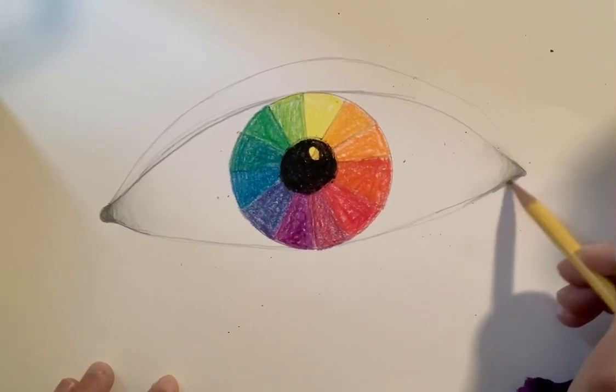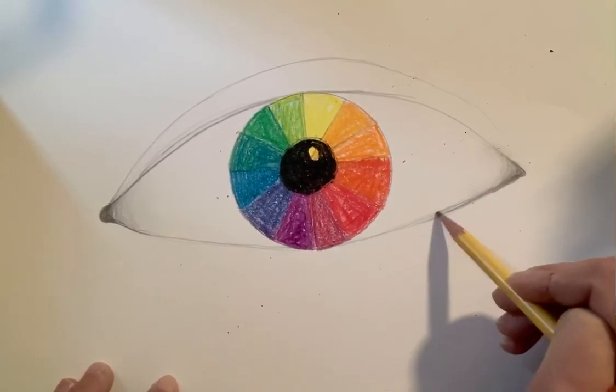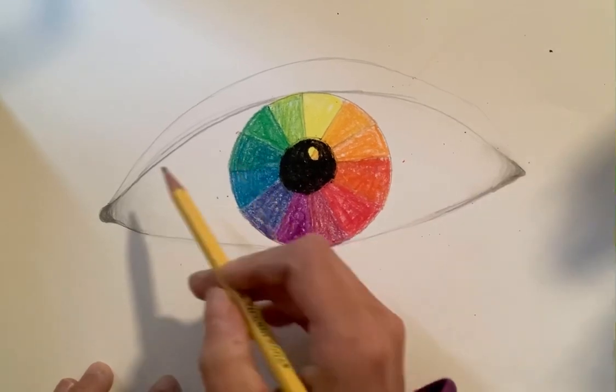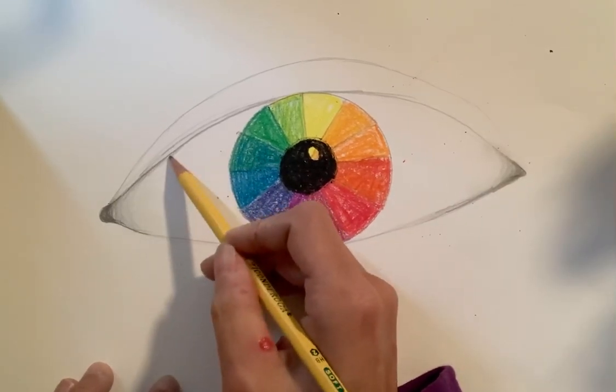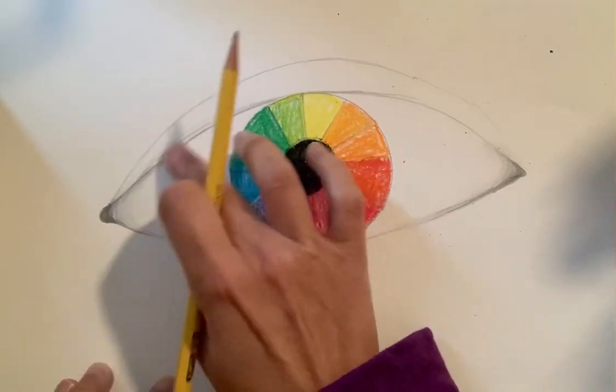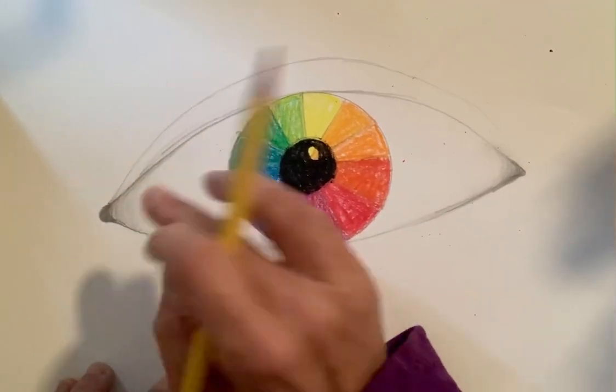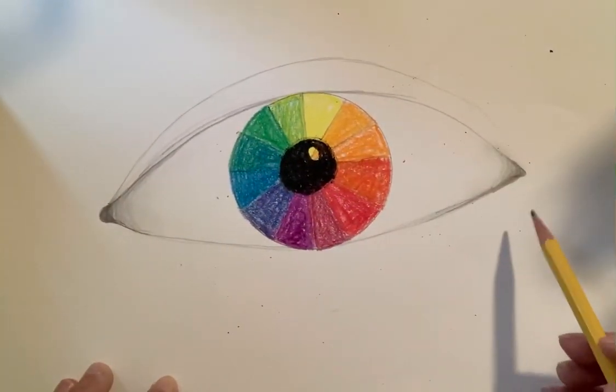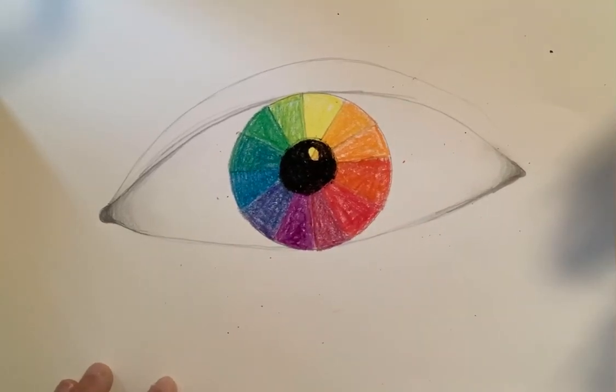We talked about that a little bit with our cube last week. So you can add a little bit of a smudge to anything that you feel might have a shadow. That might be the end of your drawing.